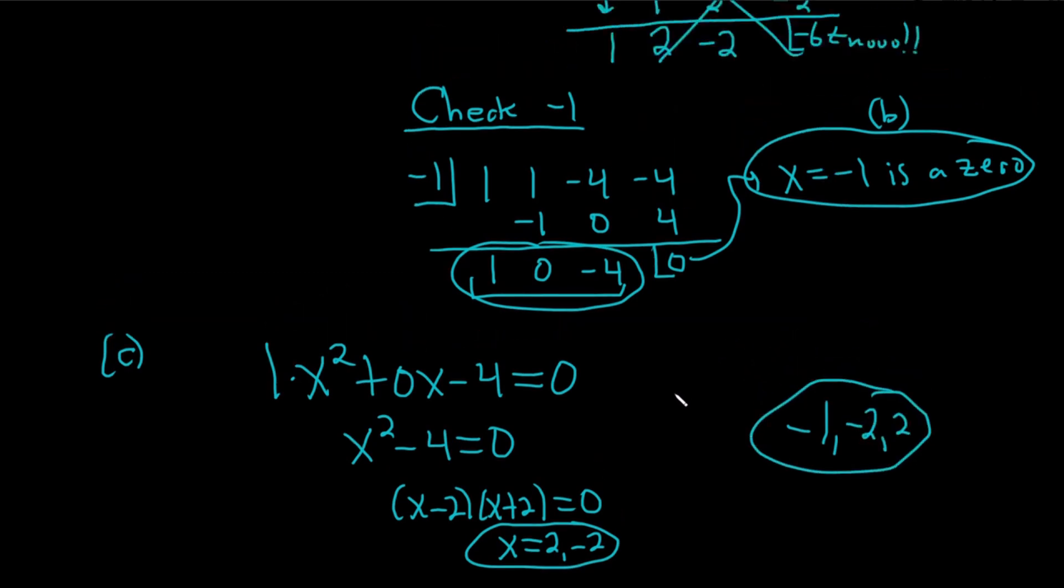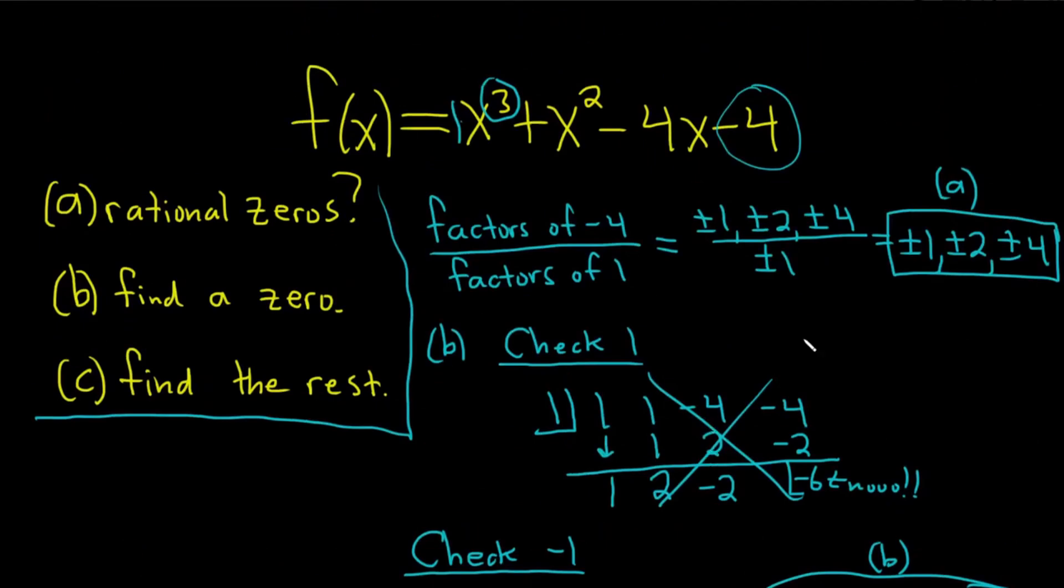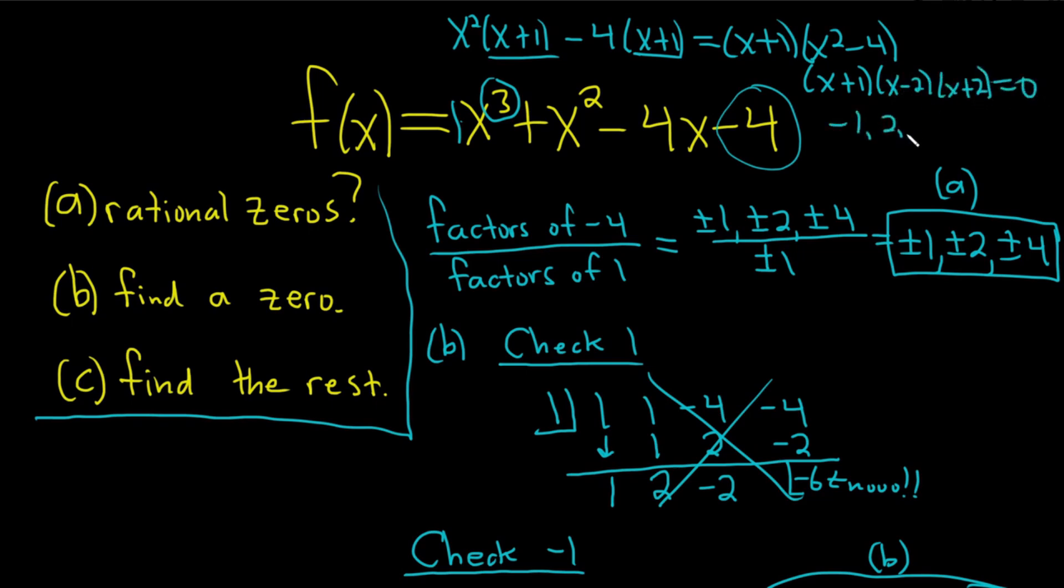Now, I'm pretty sure this is like the easiest possible example. So we could have done this another way. I'm pretty sure we could have factored out an x squared here and written this as x plus 1. And then pull out a 4 here and write this as x plus 1. And watch this. Now you can pull out an x plus 1. x plus 1. And then we have x squared minus 4. And this is x plus 1. The difference of squares is x minus 2. So you can factor this entire polynomial, set it equal to 0, and we get all of the answers in like 45 seconds. And we save all of this work.